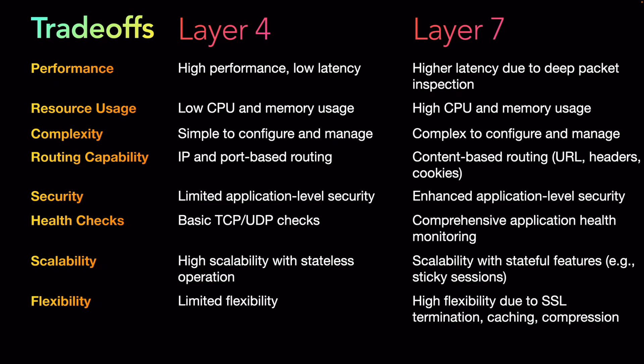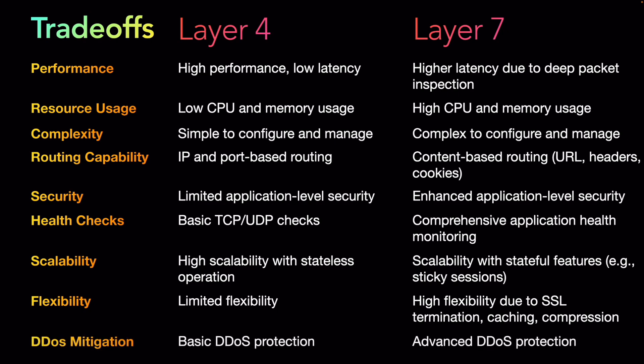For flexibility, Layer 4 is limited to IP and port-based routing, while Layer 7 is highly flexible — supporting SSL termination, caching, and compression in addition to application-based routing. Regarding DDoS mitigation, Layer 4 provides only basic protection dependent on IP and port, while Layer 7 offers more advanced protection with additional guardrails based on content, data, and metadata to mitigate denial-of-service attacks.